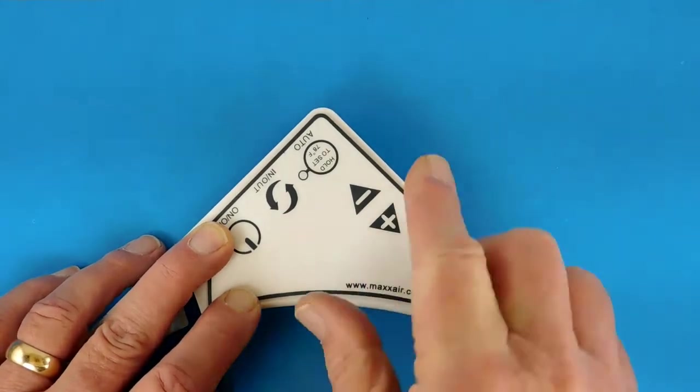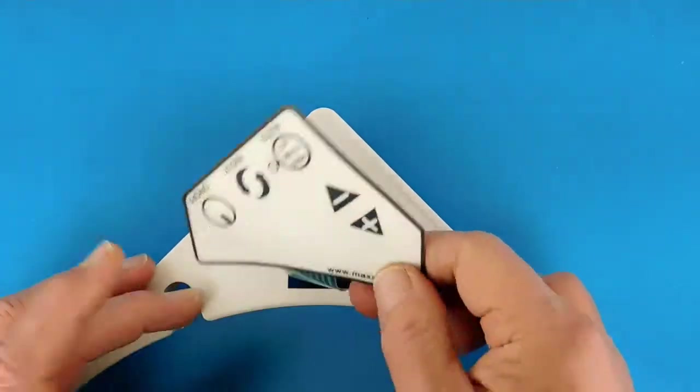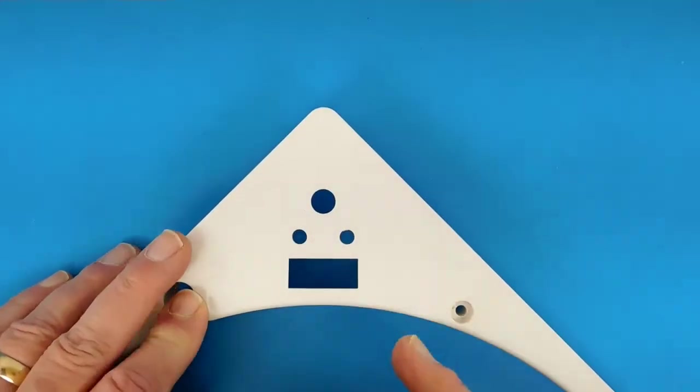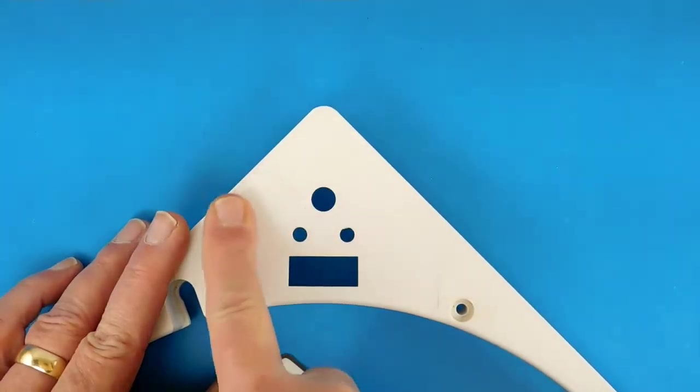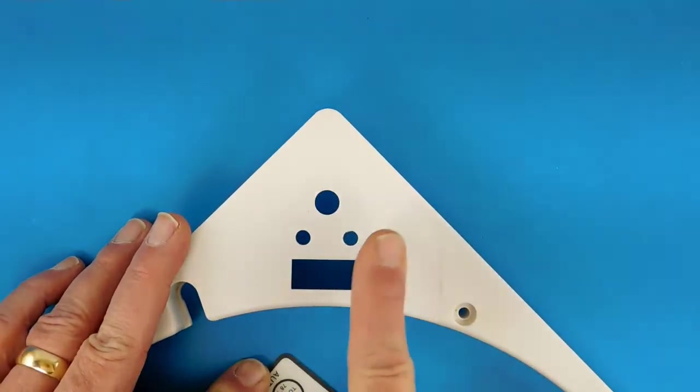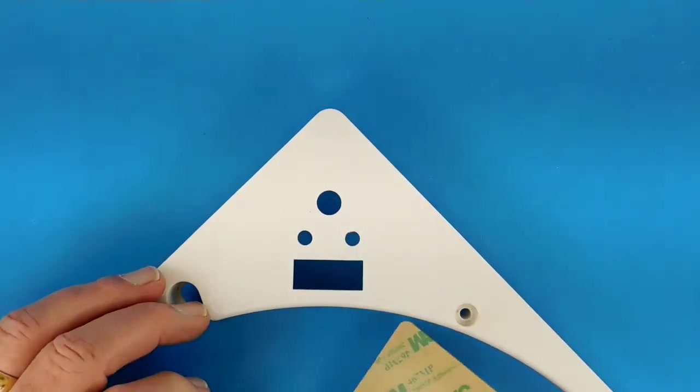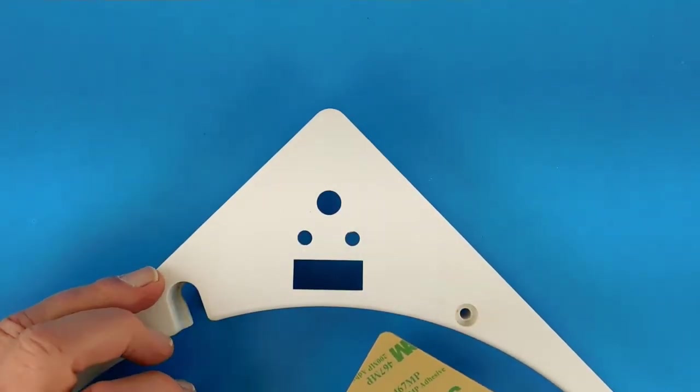So I peeled the old one off. It's just stuck on there with some 3M cement. This is the new one, by the way. So I peeled the old one off and I took some lighter fluid and cleaned the residue off of this surface so that when I peel the label off here and stick this one down, it will adhere pretty well.